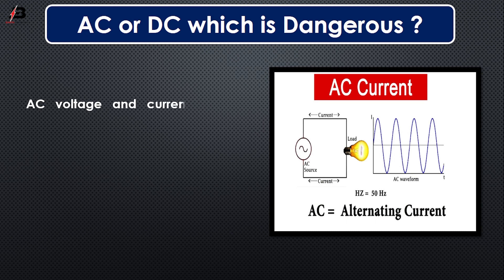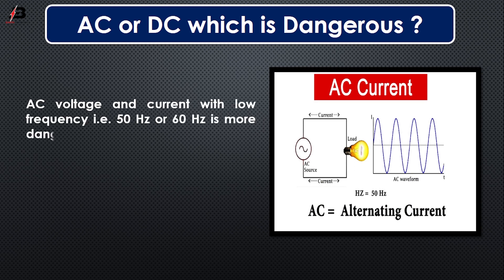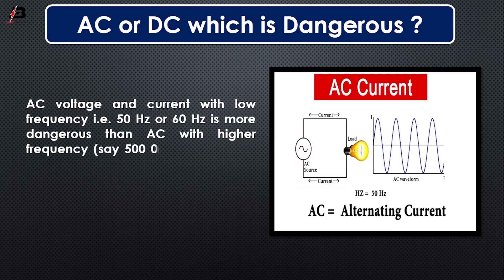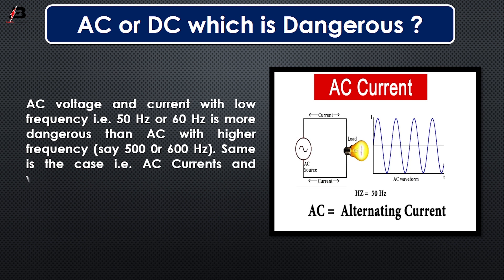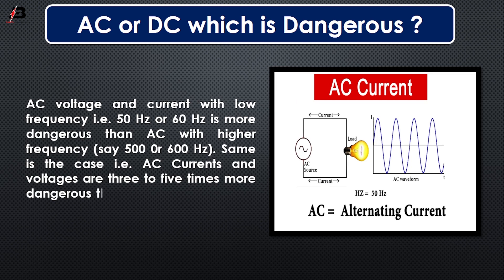AC voltage and current with low frequency — for example, 50Hz or 60Hz — is more dangerous than AC with higher frequency, such as 1500 or 600Hz. AC current and voltage are 3 to 5 times more dangerous than DC having the same level of voltage.